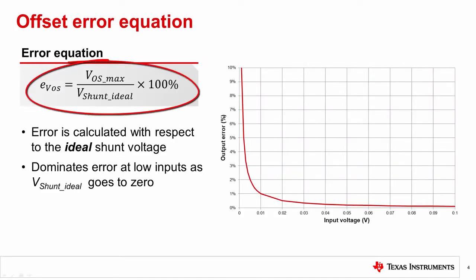The equation to calculate offset error is shown here. It is simply the ratio of the maximum VOS to the ideal shunt voltage. V shunt ideal is the product of the load current and ideal shunt resistor value, ignoring the tolerance and temperature drift of the resistor itself, which will be discussed in later videos.